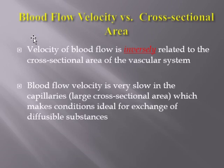The next concept is blood flow velocity versus cross-sectional area. Velocity of blood flow is inversely related to the cross-sectional area of the vascular system. The larger the cross-sectional area, the lesser the velocity — just as increasing the diameter of a pipe slows the fluid flow if the volume remains the same. Blood flow velocity is very slow in the capillaries, which have a very large cross-sectional area, making conditions ideal for exchange of diffusible substances and providing ample time for exchange.